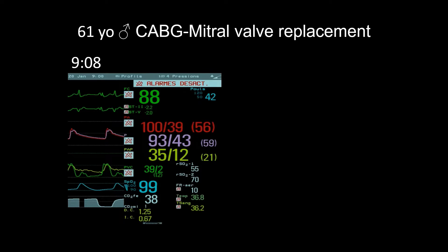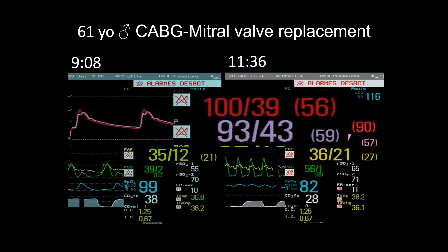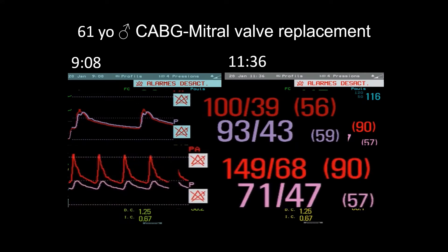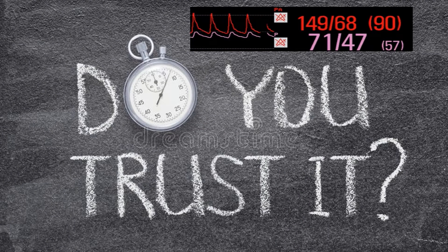A 61-year-old man undergoing mitral valve replacement with coronary revascularization. This is the femoral in red, the radial in pink. After bypass, there is a 78 mm gradient between the femoral and the radial. In this case, the brain saturation is even higher than before bypass. You have a 78 mm systolic and a 33 mm mean pressure difference. So, can you really trust a radial artery pressure monitor?